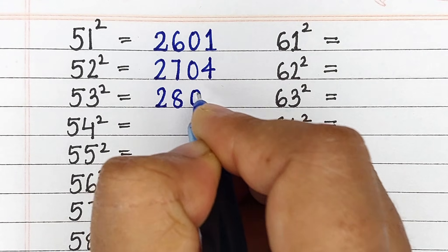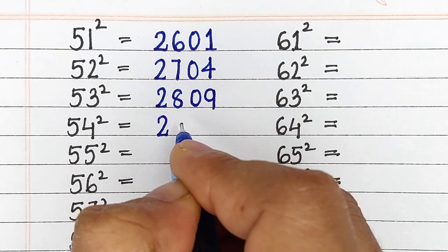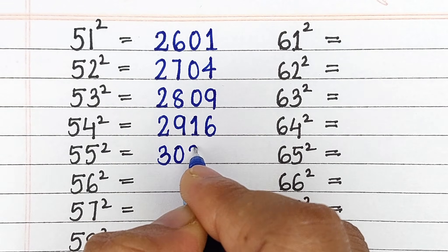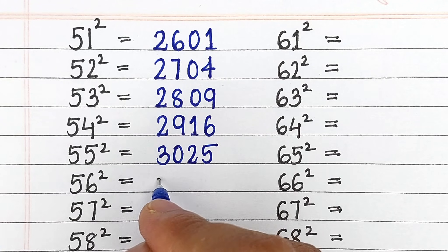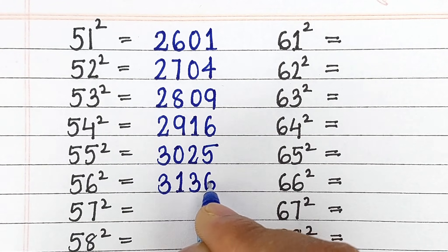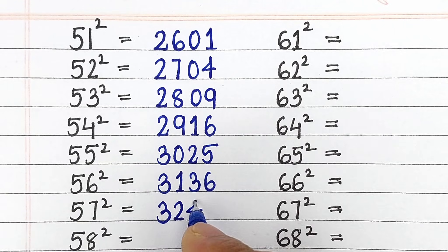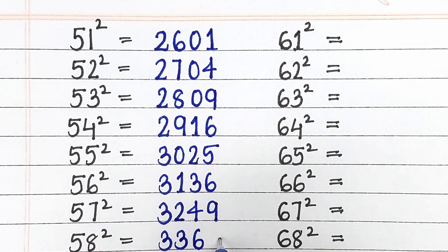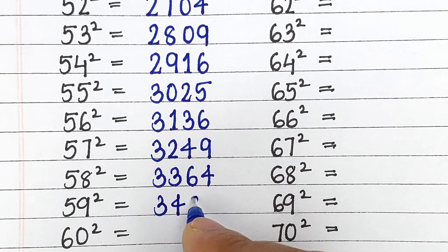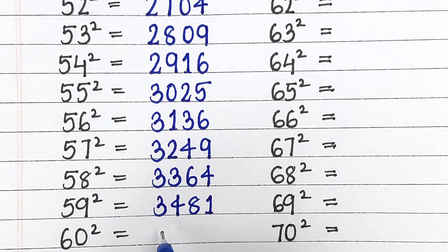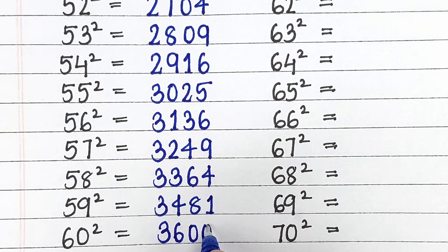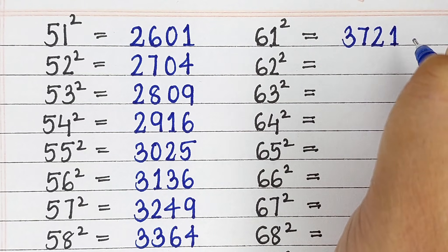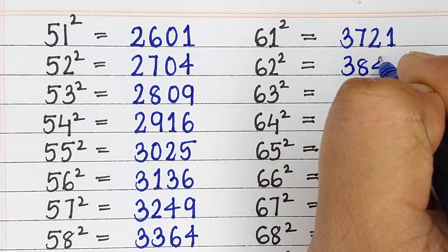Square of 54 is 2916, square of 55 is 3025, square of 56 is 3136, square of 58 is 3364, square of 59 is 3481, square of 60 is 3600, square of 61 is 3721.